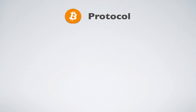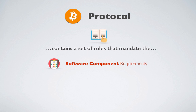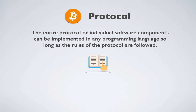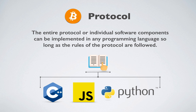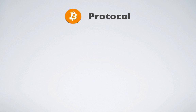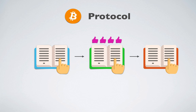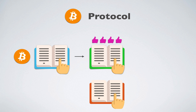The Bitcoin protocol contains a set of rules that mandate the software component requirements and the data structure requirements for validating the creation, exchange, and storage of Bitcoin on the Bitcoin network. The entire protocol or individual software components can be implemented in any programming language, so long as the rules of the protocol are followed. The protocol's rules can only change if there's consensus. If there are changes to the protocol without consensus, then a split or fork of the code implementation occurs.